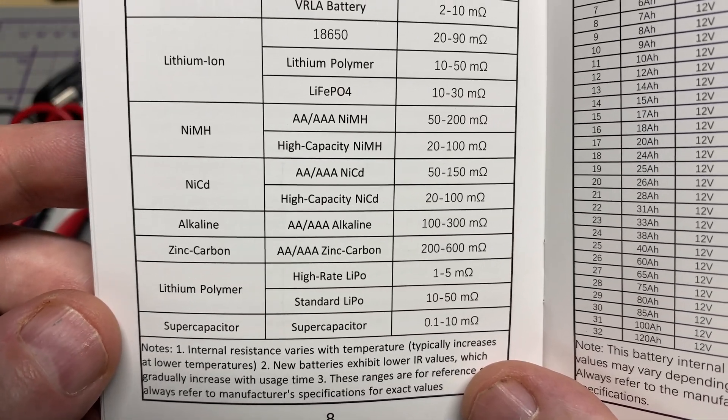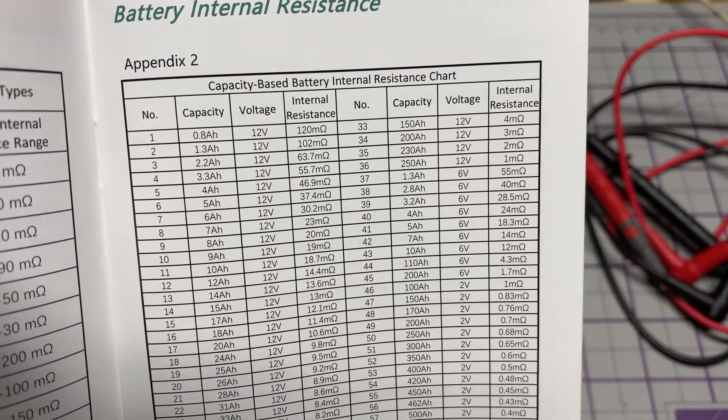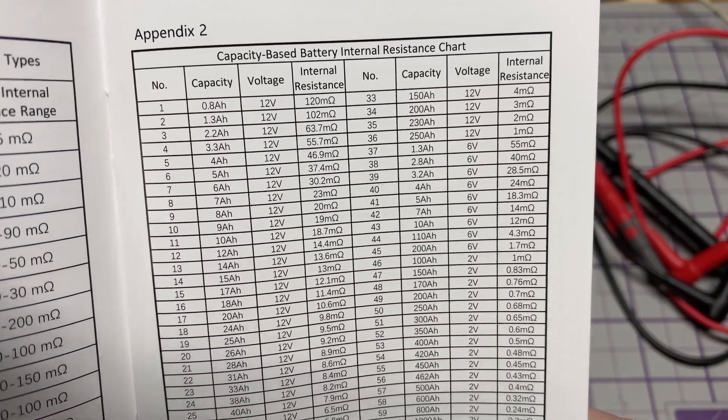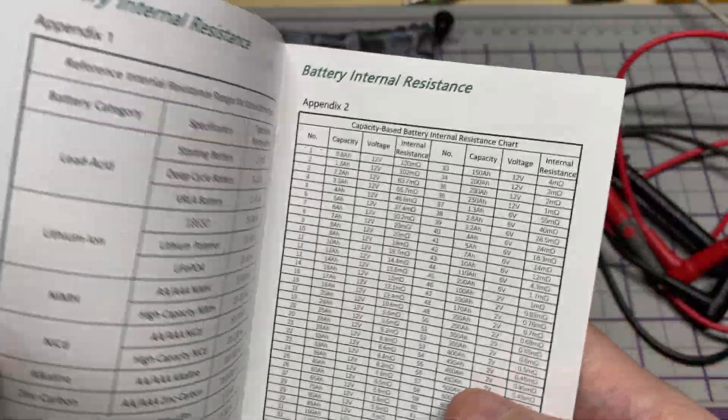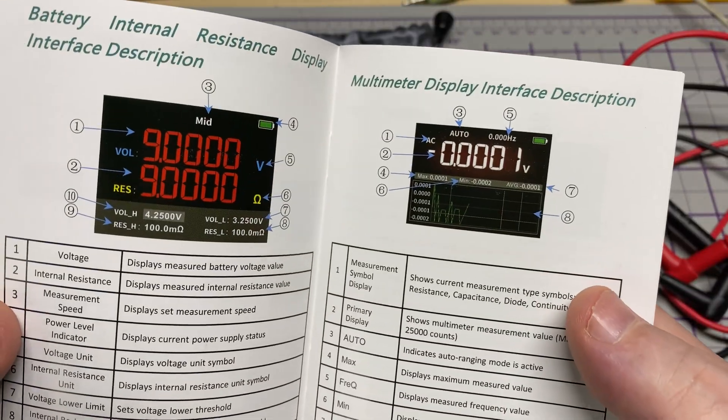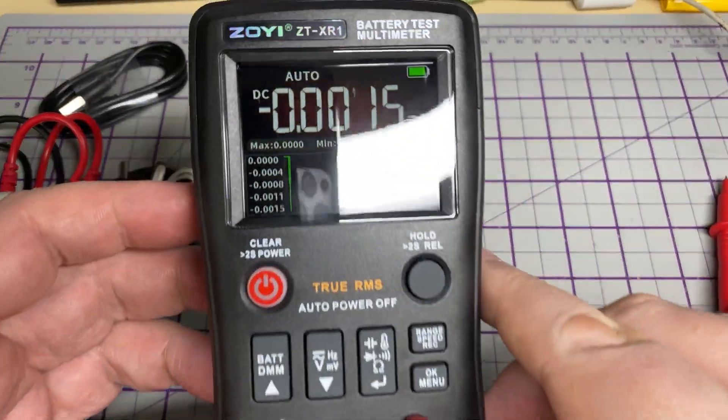Today we're going to be testing some lithium-ion 18650s and some zinc carbons. This will test lead acid, lithium-ion, nickel metal hydride, NiCad, alkaline, zinc carbon, lithium polymer, and super capacitor. Very nice.